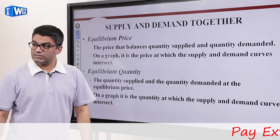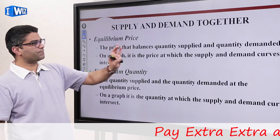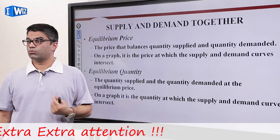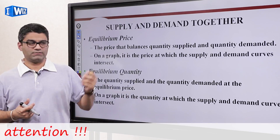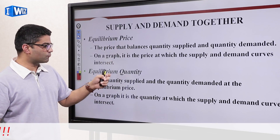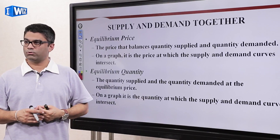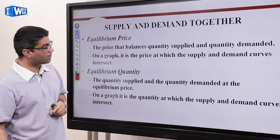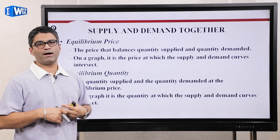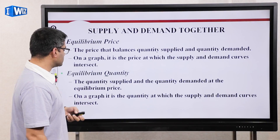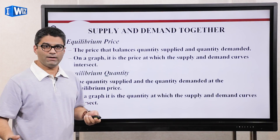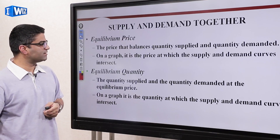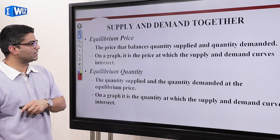The equilibrium price is the price where the amount of commodity that producers want to produce and the amount that consumers want to buy are equalized. Equilibrium quantity is that quantity where Qs and Qd are equal. Both of these have very important implications. We'll also talk about what happens if we are not in equilibrium — if the price is not the equilibrium price and the quantity is not the equilibrium quantity. Graphically, the intersection of the supply and demand curves will tell us those points.